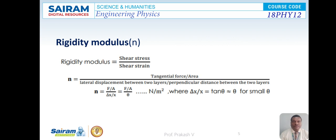Next is rigidity modulus. It is the ratio of shear stress to the shear strain within the elastic limit. Rigidity modulus is denoted by the symbol N. That is tangential force per area divided by lateral displacement between two layers divided by perpendicular distance between the two layers. So, rigidity modulus N is equal to F/A divided by ΔX/X, or F/A divided by theta, with units Newton per meter square.